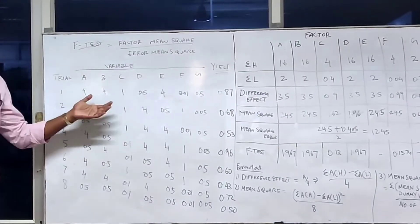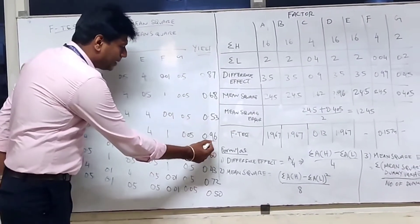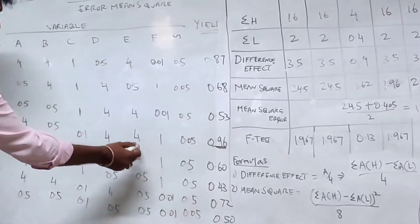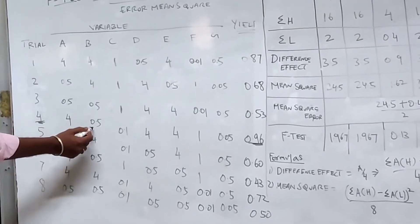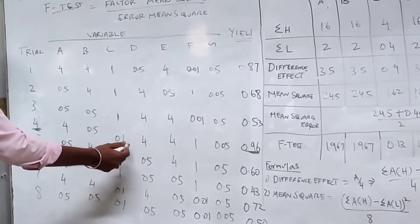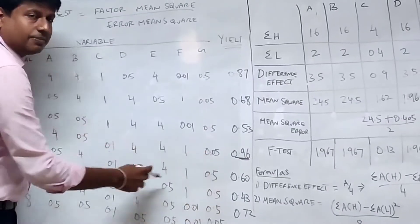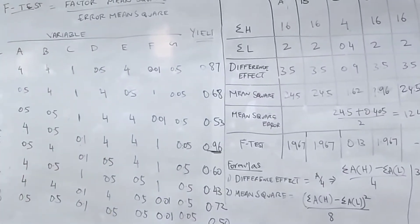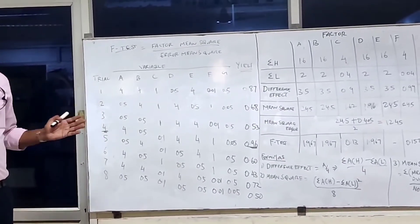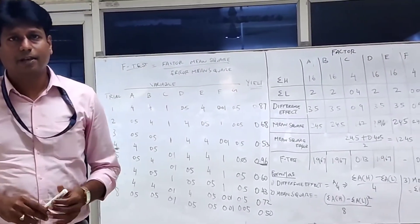After two hours of incubation, we take all conical flasks out and measure the OD values in the laminar airflow before the HEPA filter. We conducted eight experiments and recorded the OD values. The highest OD value is 0.96, corresponding to run number 4, which has the highest value of A, lowest of B, lowest of C, highest of D, highest of E, highest of F, and lowest of G. This combination gives the optimized medium. That's all about the Plackett-Burman design. Thank you.